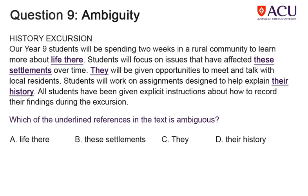Question 9 is an example question from the first sample test. This asks you to identify any ambiguity caused by poor or inadequate use of referent or connective language — an important skill for teachers. The paragraph is about a year 9 history excursion. Looking at the options: 'life there' refers back to the rural community in the same sentence; 'these settlements' also refers to the rural community; 'they' in answer C refers to students in the previous sentence. That leaves 'their history', which is ambiguous, as it is not clear whether it refers to the students or the local residents. So the answer is D.